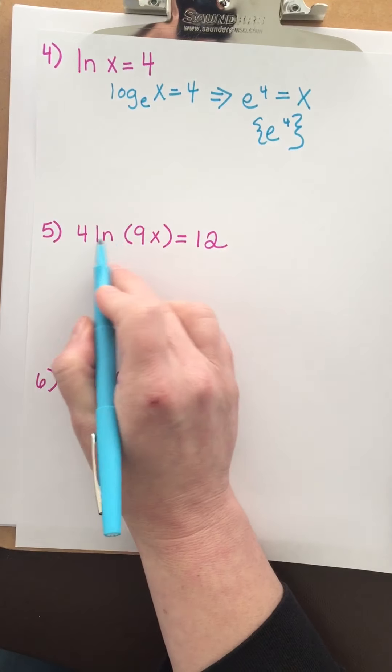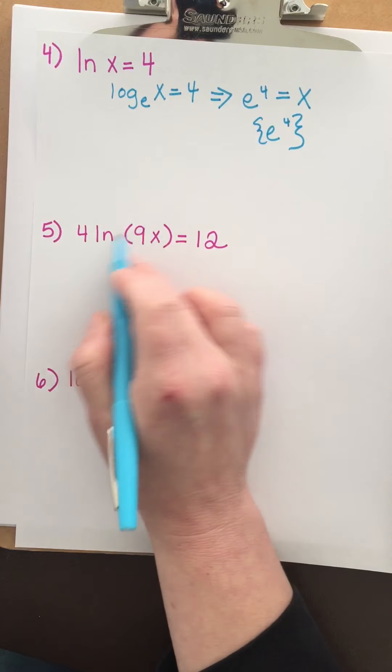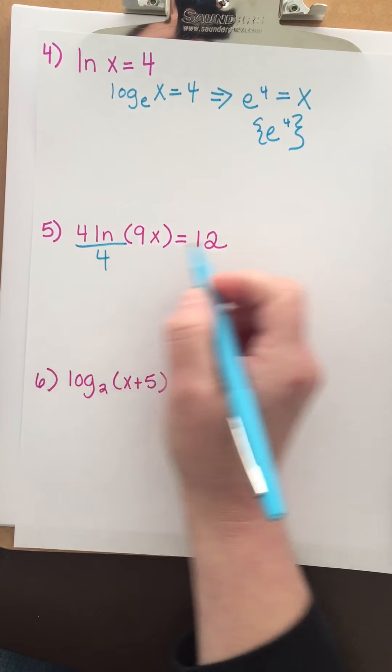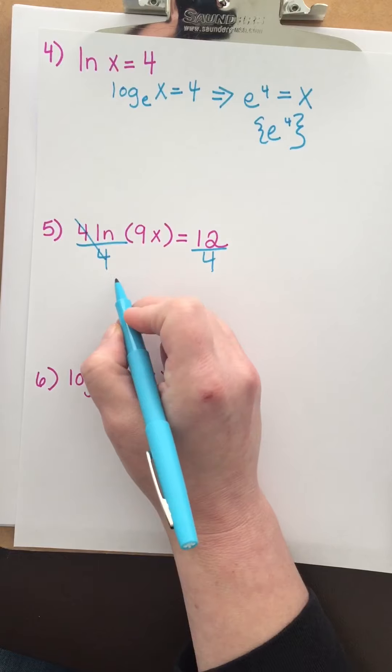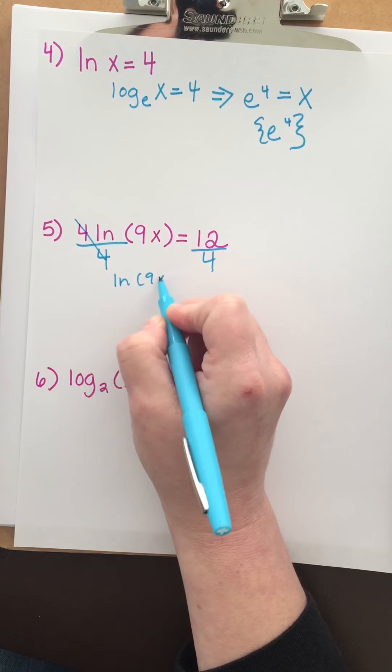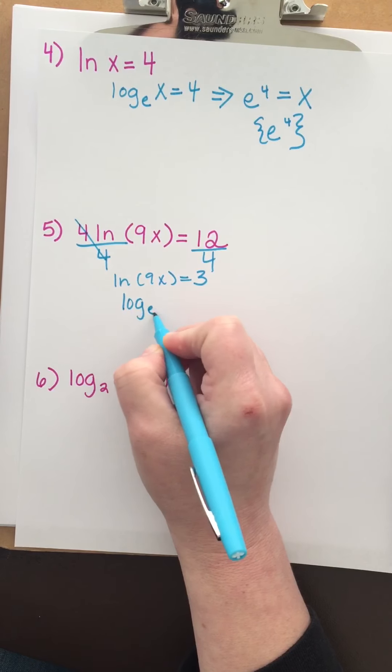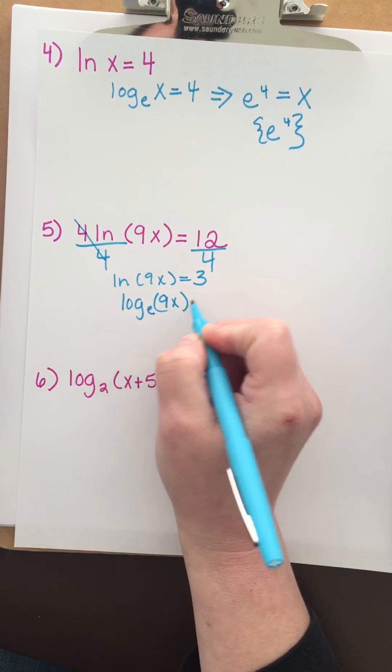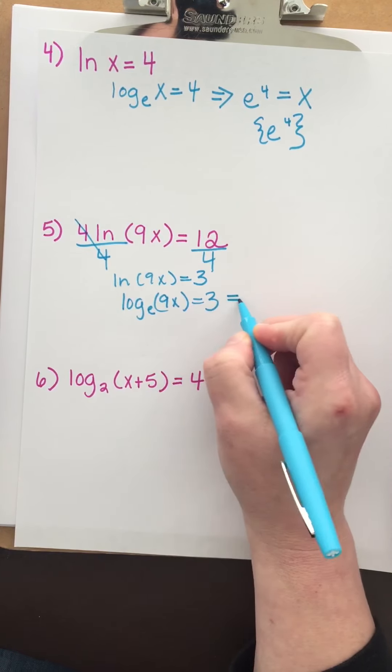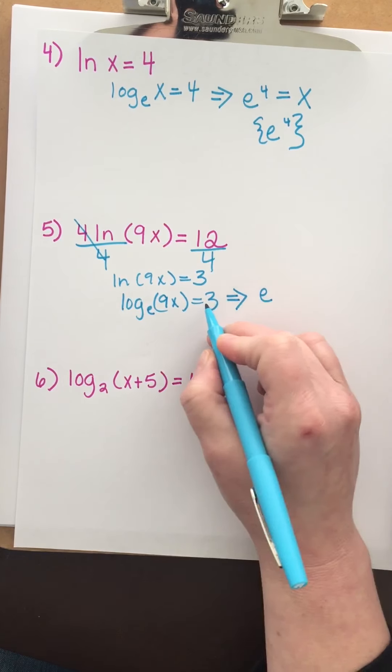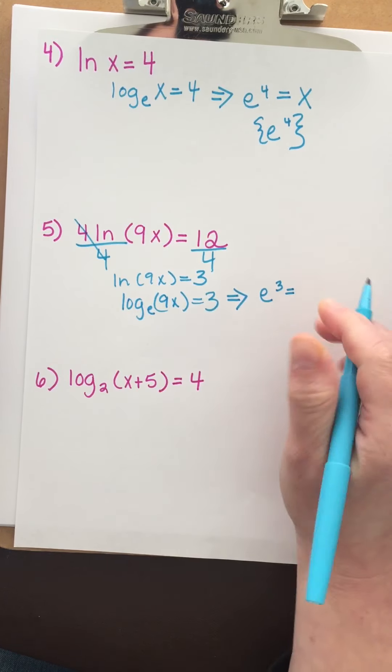For this example, I need step 1 first: get the log by itself. Dividing both sides by 4, we get natural log of 9x equals 3. This is log base e of 9x equals 3. Changing to exponential form, we have e to the 3rd power